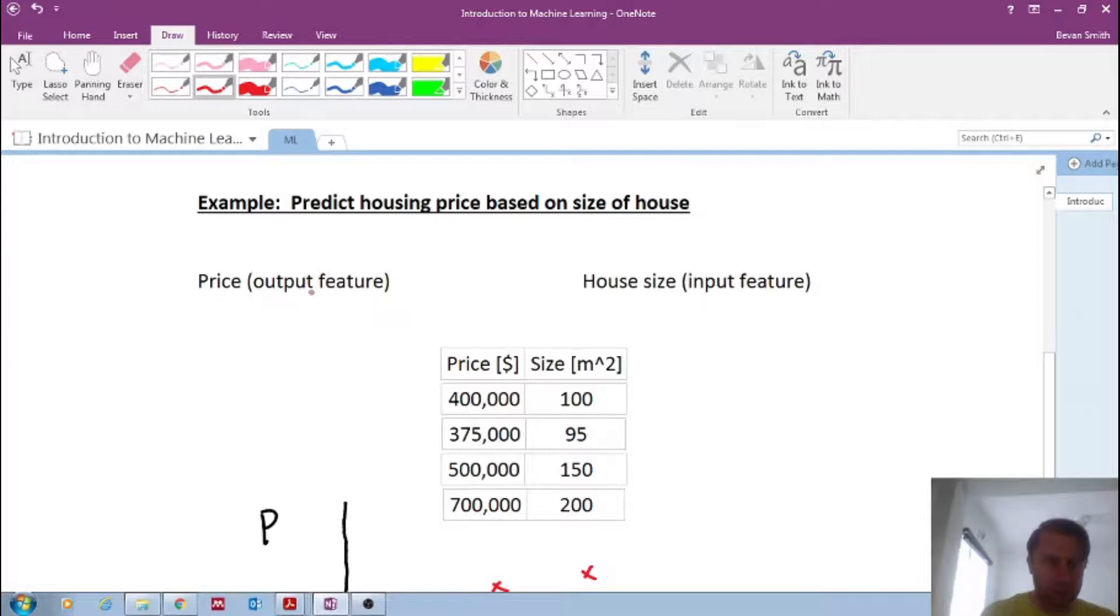So the output feature, we want to predict price. That is our output based on an input feature, which is the house size. Now I've made up these numbers. The price. So this is now historical data, historical data, data that we've gotten from previous years, for example, it's data that we have.